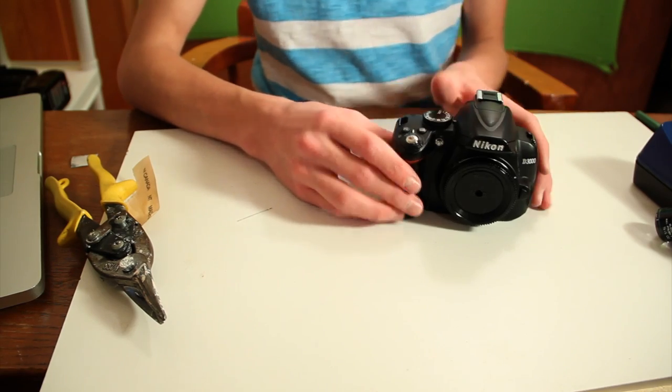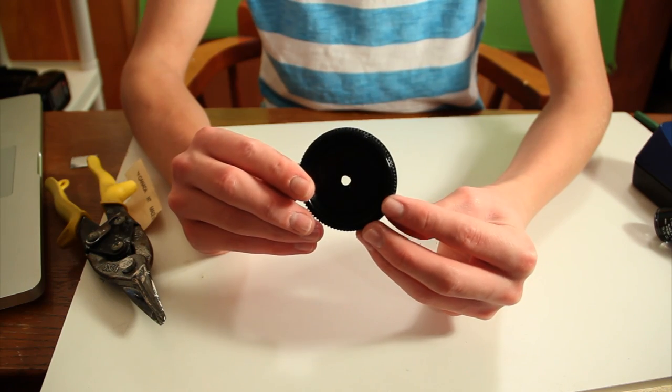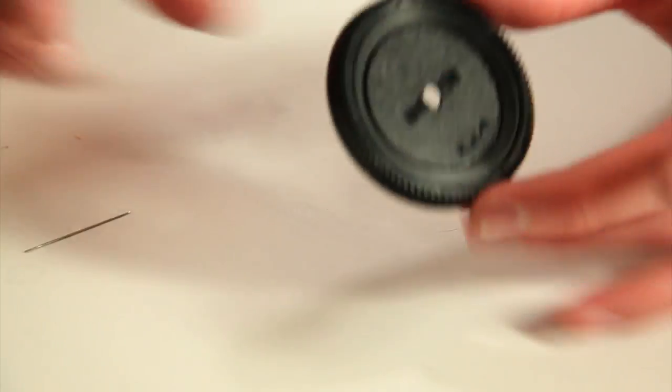Next, we move on to the camera part. First, you're going to want to take your camera body cap off. And you're going to want to drill a hole about a quarter inch in your body cap.